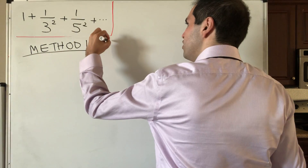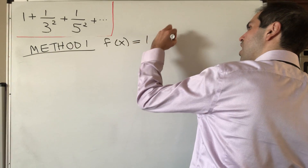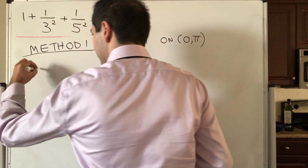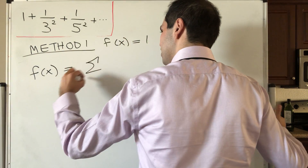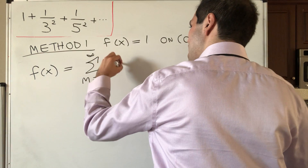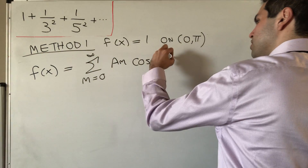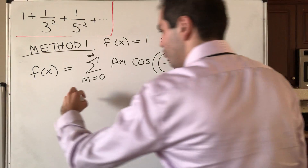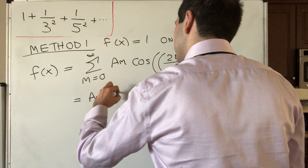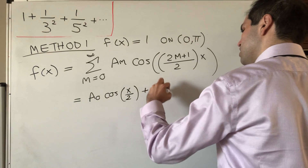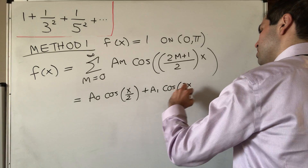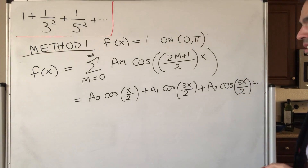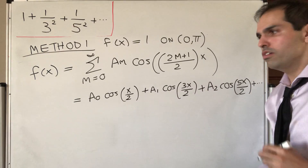Method 1: consider the function f(x) = 1 on the interval [0, π], and let's try to expand f in terms of cosine. So let's try to write f(x) as a sum from m = 0 to infinity of a_m cosine of (2m+1)/2 · x. This is a_0 cosine(x/2) plus a_1 cosine(3x/2) plus a_2 cosine(5x/2), and so on — just cosines of odd multiples of 1/2.